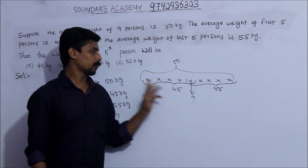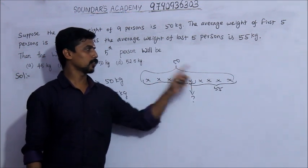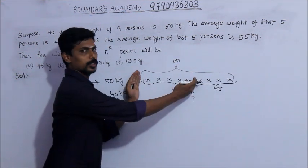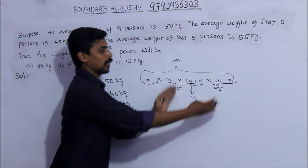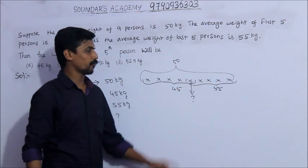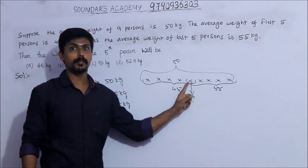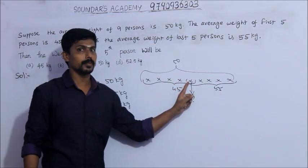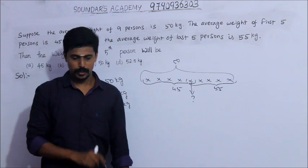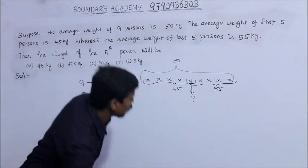So, if we take the total weight of all 9 persons, the total weight of the first 5 persons, and the total weight of the last 5 persons, we can identify the common person, which is the 5th person. Let's work through this calculation.